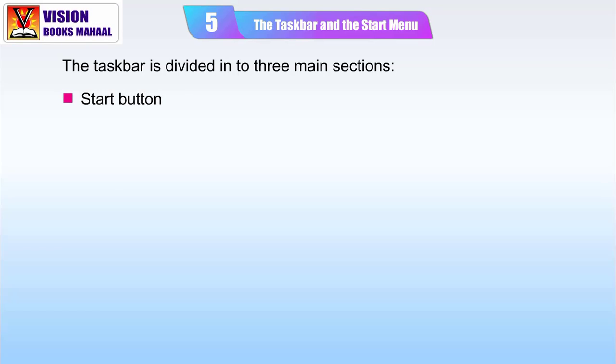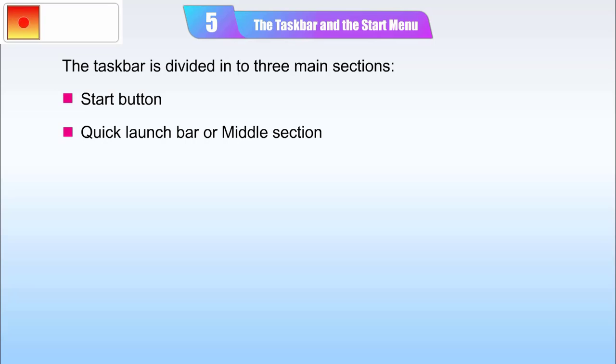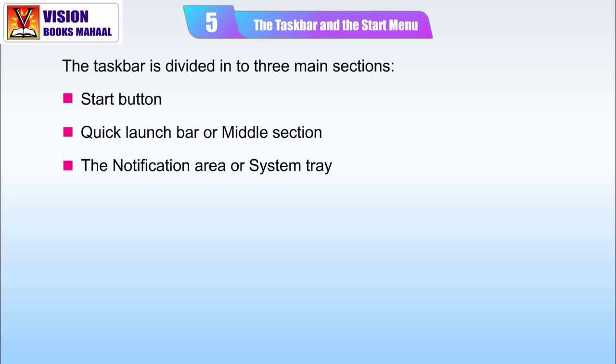The three main sections of the taskbar are: the Start Button, the Quick Launch Bar or Middle Section, and the Notification Area or System Tray.